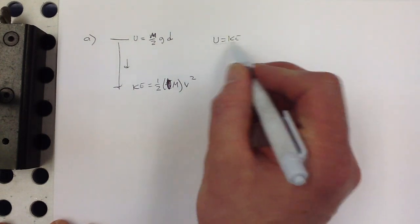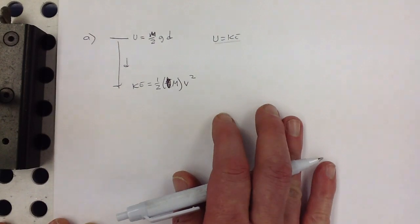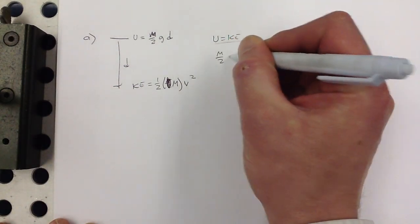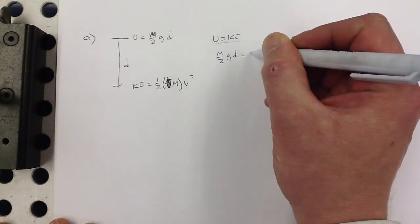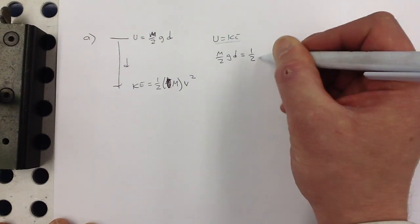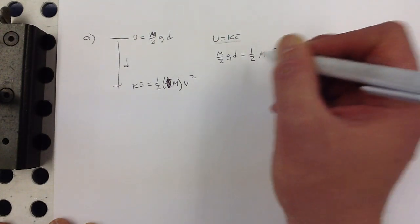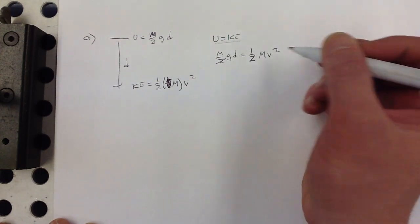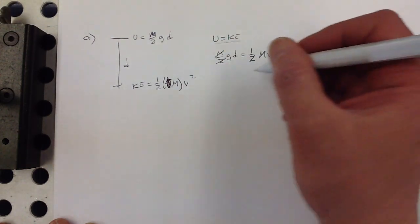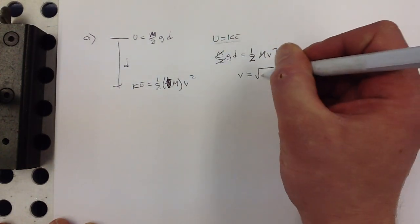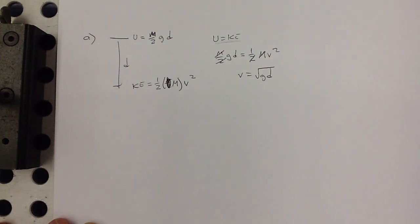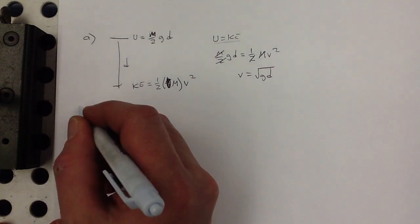And setting those equal to each other. I'm going to write that down, right, make sure I'm probably going to get a point for that. So that's m over 2, g, d is equal to one-half m, v squared. The twos cancel out, the m's cancel out. So v is equal to the square root of g, d.